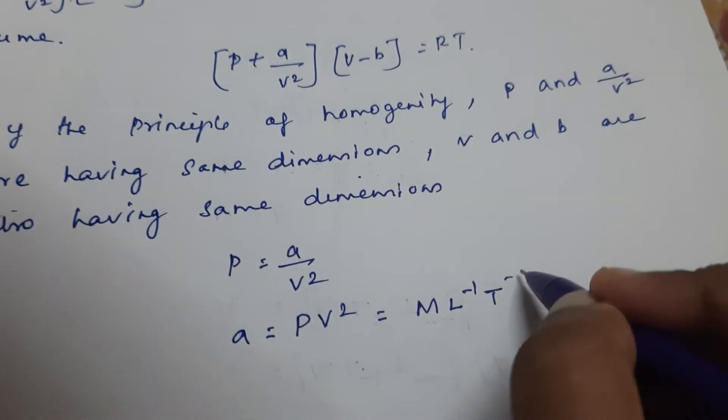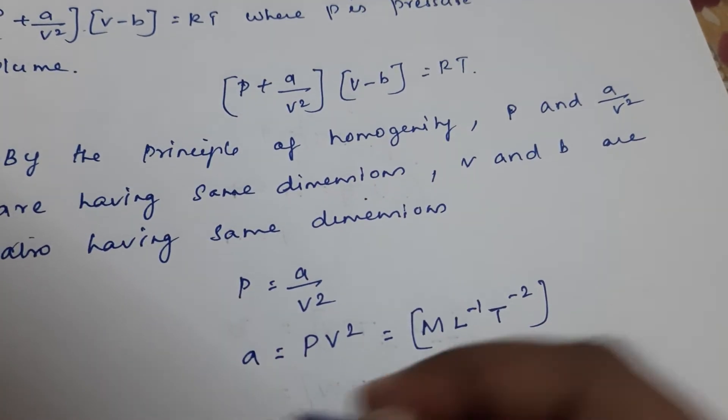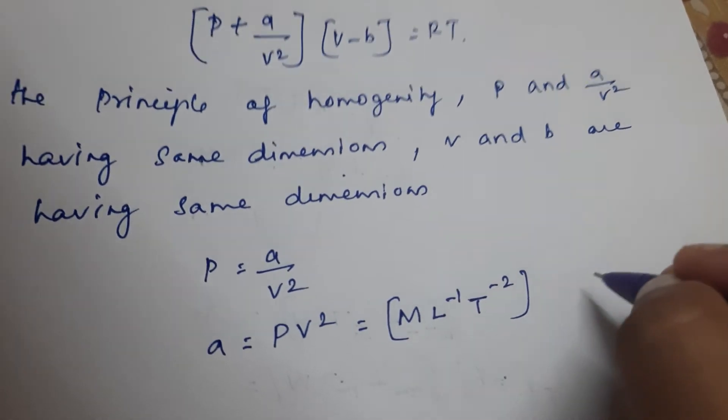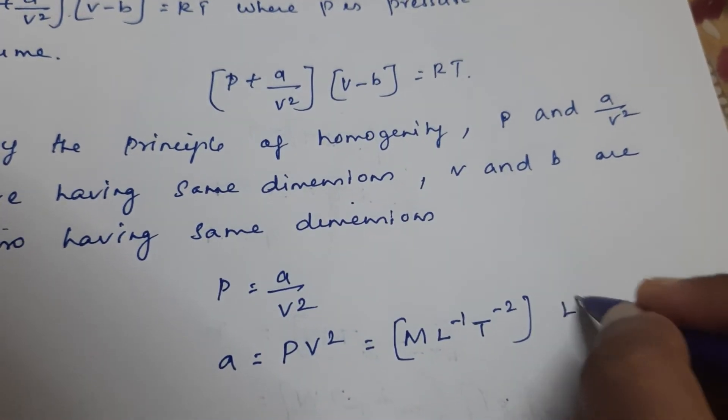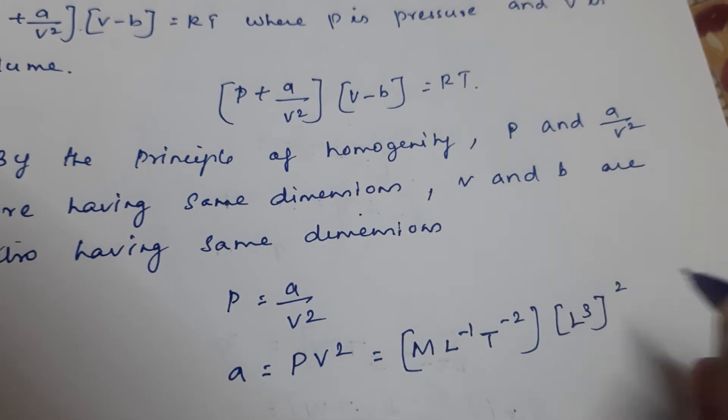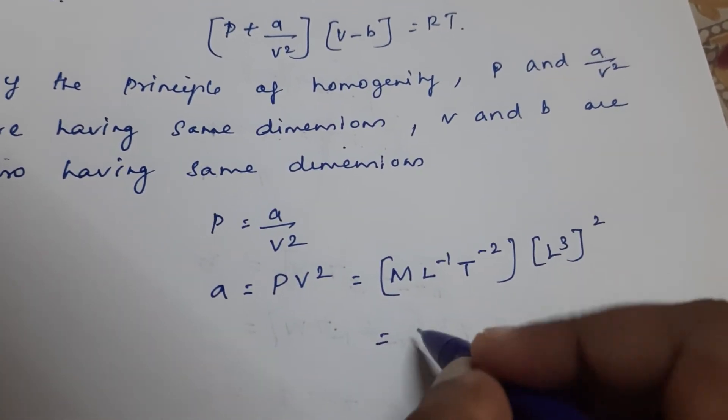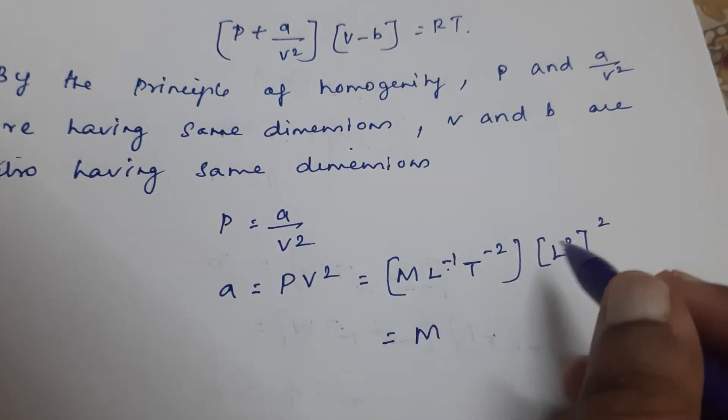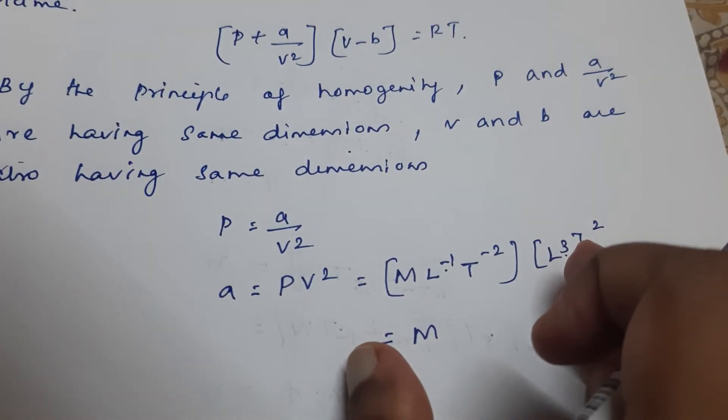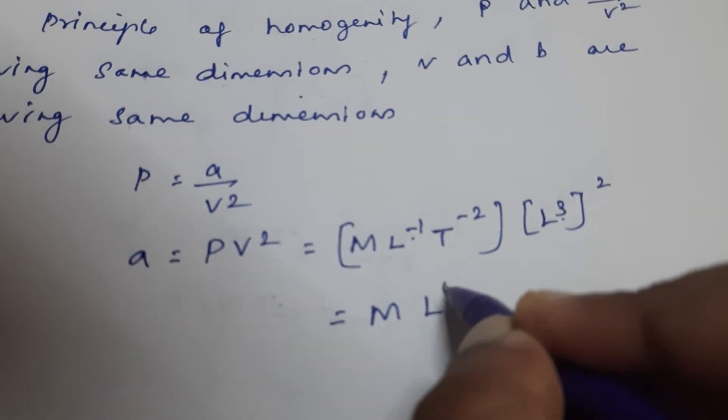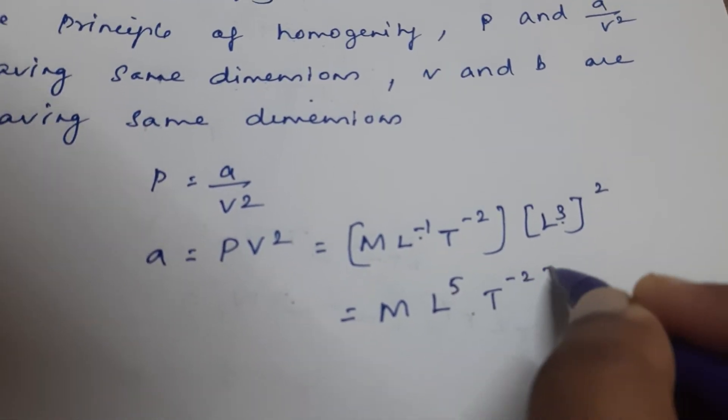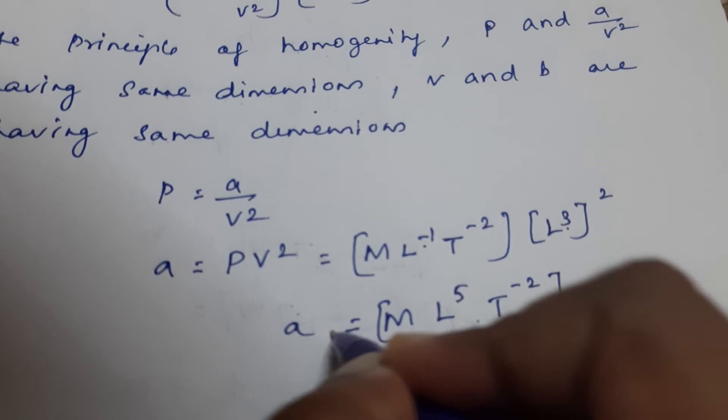What is the dimension for V? V is volume, so the dimension for V is L³. So it is (L³)² which can be written as M(L⁻¹)(L⁶), giving us M L⁵ T⁻². So a has dimensions M L⁵ T⁻².